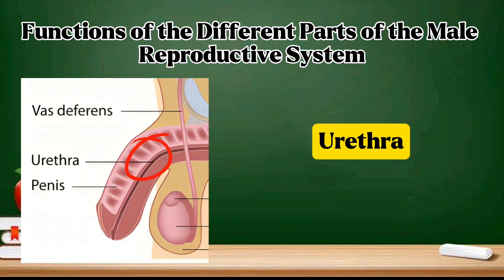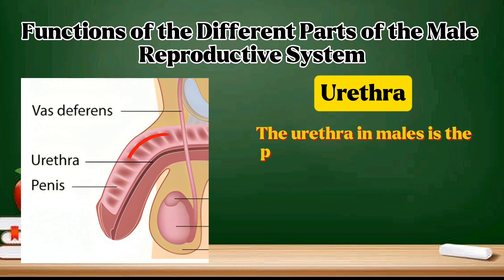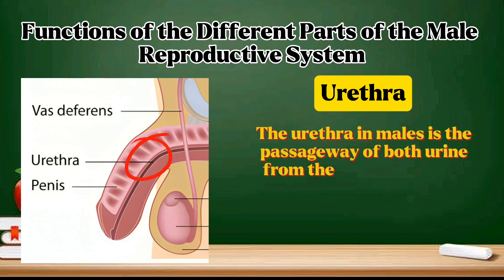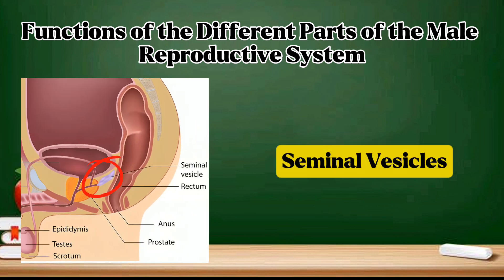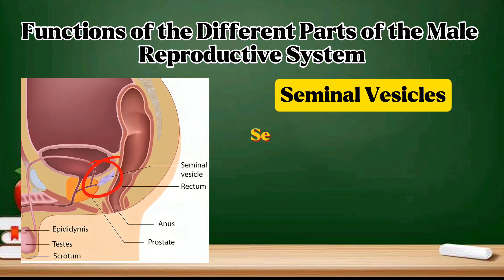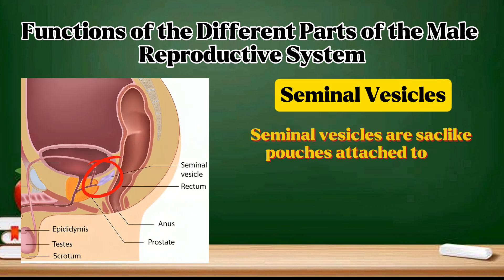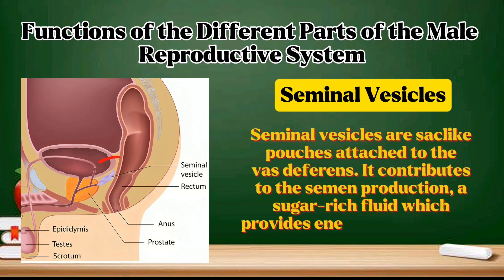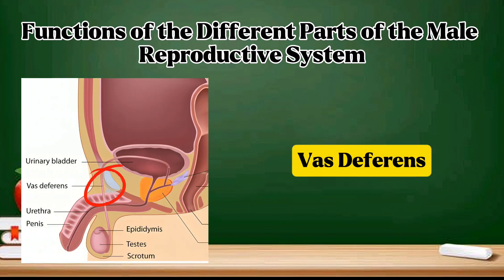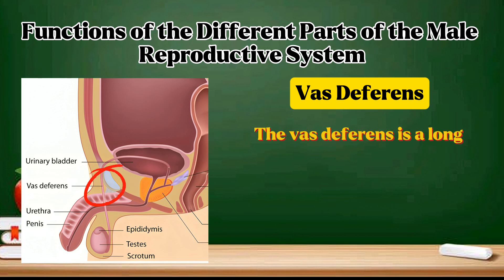Urethra: in males, the urethra is the passageway of both urine from the urinary bladder and semen from the glands. Seminal vesicles: the seminal vesicles are sac-like pouches attached to the vas deferens. They contribute to semen production by secreting a sugar-rich fluid which provides energy for the sperm cells' motility.